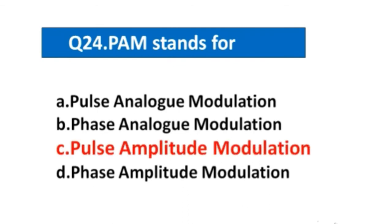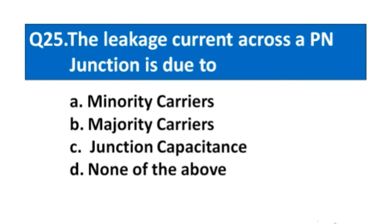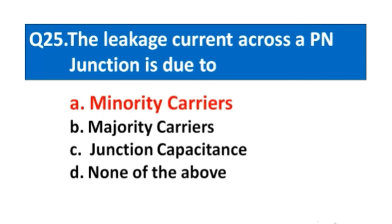Question number 25. The leakage current across a PN junction is due to option A. Minority carriers, B. Majority carriers, C. Junction capacitance, D. None of the above. The right answer option A. Minority carriers.